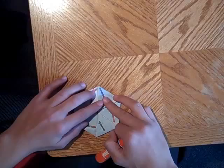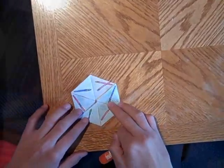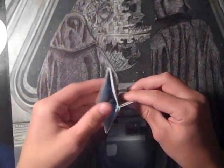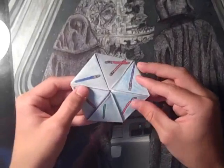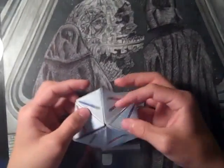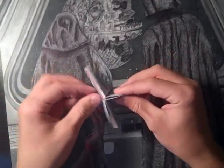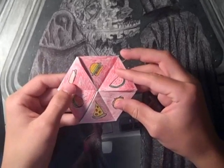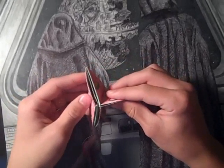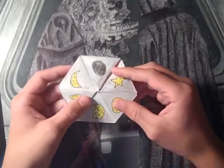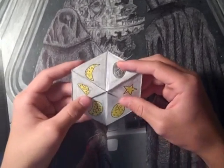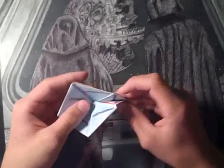Seal that baby up tight and then you're ready to start folding. So starting on face one we move to face two, then to face three, then from there we go back to face one, then we move again to face two.